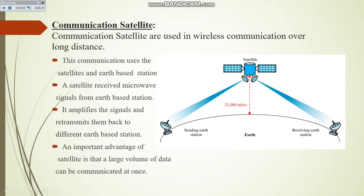Earth base stations, meaning towers, allow us to send broad data — data that travels a very high distance. A satellite receives microwave signals from an earth base station, amplifies the signals, and retransmits the data to the receiving earth station. An important advantage of satellites is that a large volume of data can be communicated at once. I hope that's clear — thank you so much, Allah Hafiz.